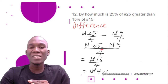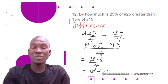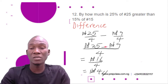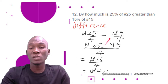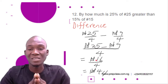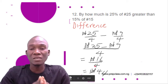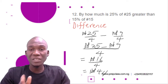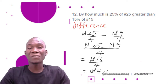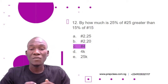When we are subtracting fractions, first we find the LCM of the denominators. The denominators here are both 4, so the LCM is 4. How many 4s in 4? That is 1. 1 multiplied by 25 is still 25. How many 4s in 4? Still 1. 1 multiplied by 9 is 9. So we have 25 naira minus 9 naira, giving us 16 naira divided by 4. 16 divided by 4 is 4 naira. The correct option is option C, 4 naira.